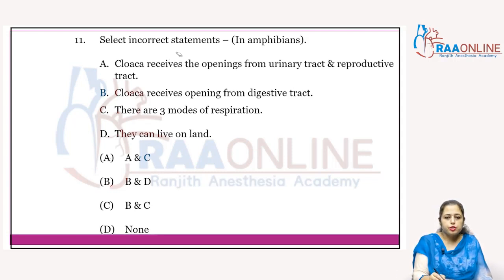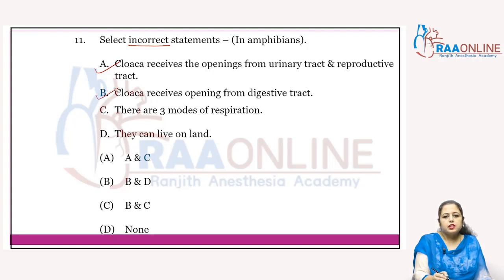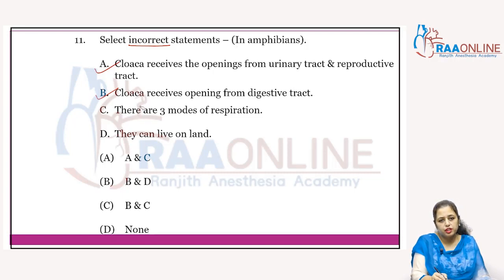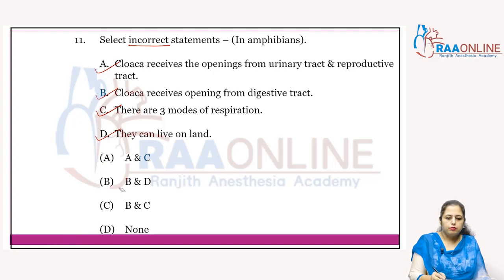Select the incorrect statement about amphibians. Cloaca receives openings from the urinary tract, reproductive tract, and digestive tract — correct. There are three modes of respiration in amphibians: cutaneous respiration, buccopharyngeal respiration, and pulmonary respiration — correct. They can live on land — correct. There is no incorrect statement, so the answer is 'none.'